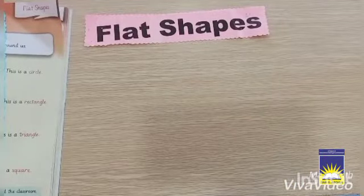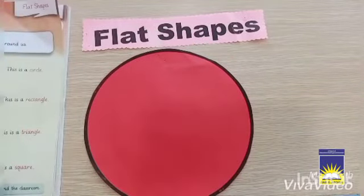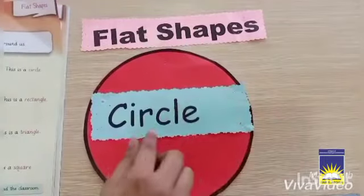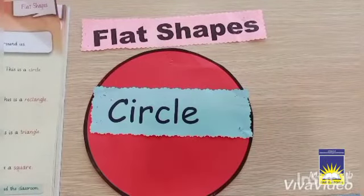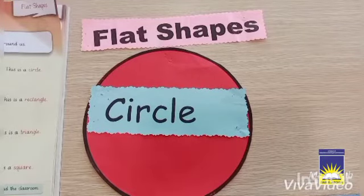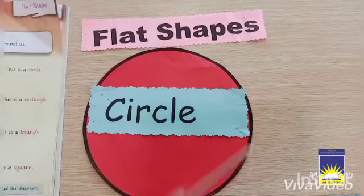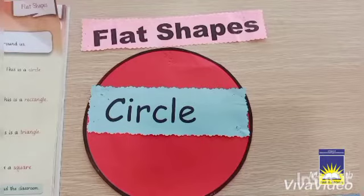This is a circle. A circle has no sides and no corners, and it is a rounded shape. You all know that circle is a round shape and has no sides and no corners.